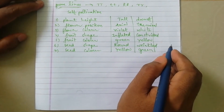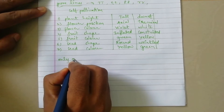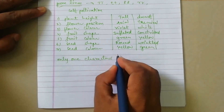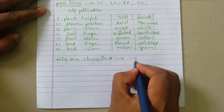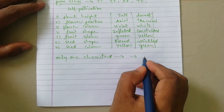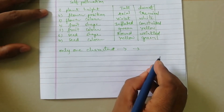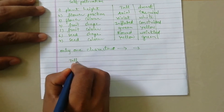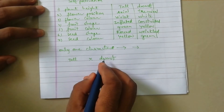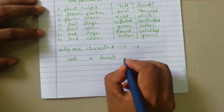In a monohybrid cross, Mendel selected only one character, but that character shows variations. By selecting only a single character with two traits, he started his experiments. For example, among all the plants he conducted experiments on, we are selecting only one plant — a tall plant and a dwarf plant. Between these two plants he conducted an experiment, selecting only one character: plant height.